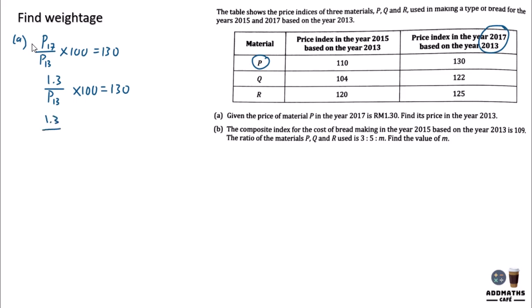So 1.3P13 equals 1.3. So 1.3 divided by 1.3 here equals P13.